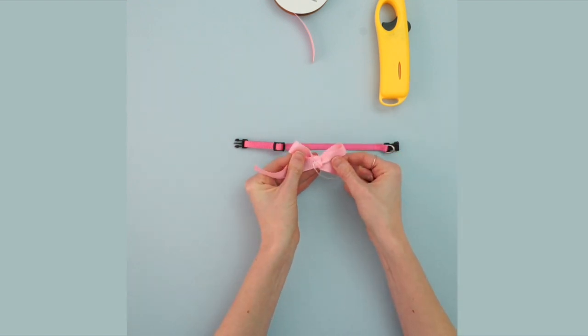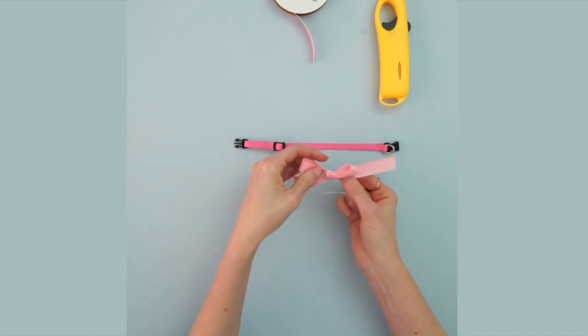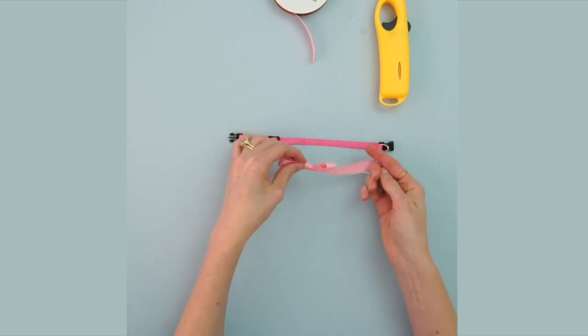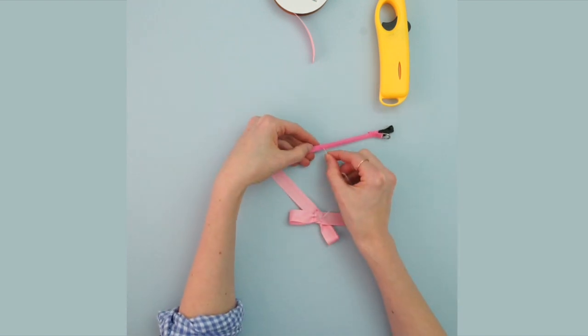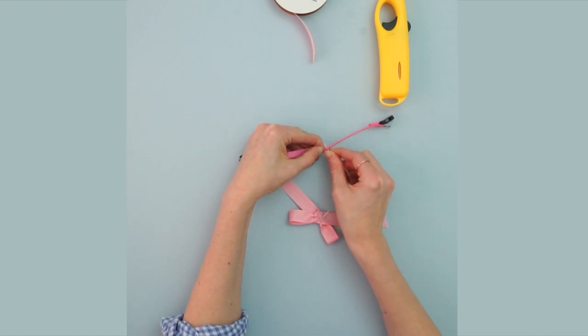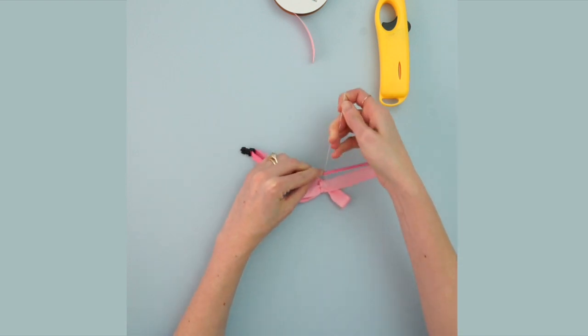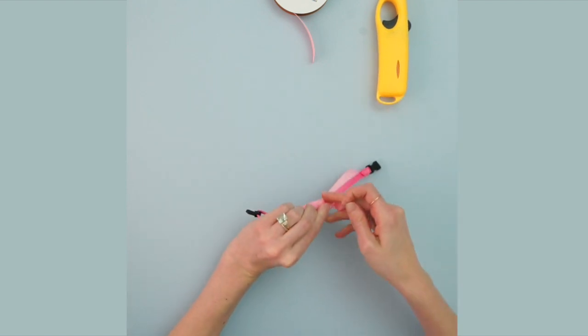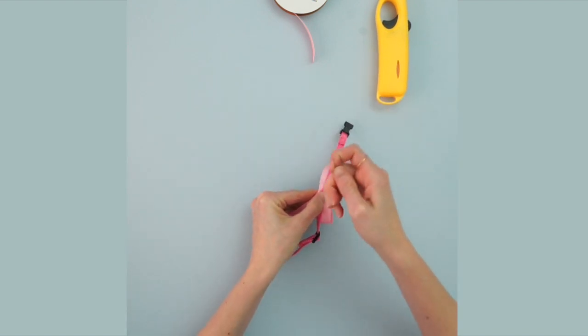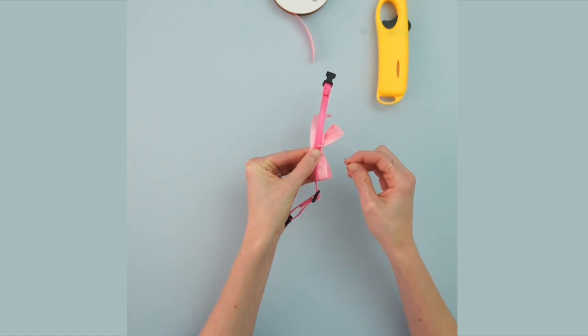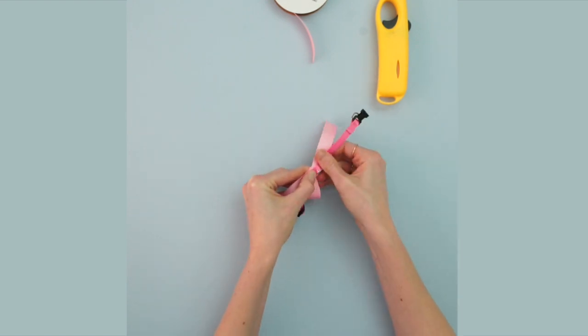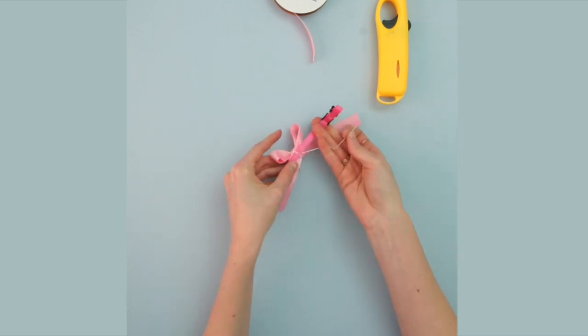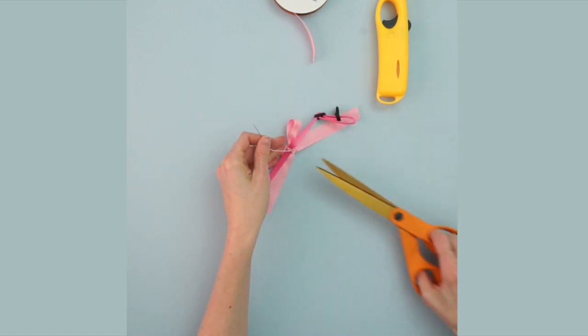Now that your bow is good and sturdy, not coming undone, go ahead and place your bow where you'd like it on the collar. I'm just going to stick it right here. Now just attach the collar to the bow. So now the bow is attached to the collar. Take your scissors and snip the ends of that.